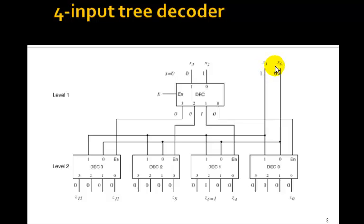The X1 and X0 inputs go to all of the 4 inputs on level 2. But since only this one is enabled, the 1, 0 here, which is a 2, is 1, 0. So the 2 output is 1, and this is Z6. So the 0, 1, 1, 0 gets decoded in this 4 to 16 decoder.